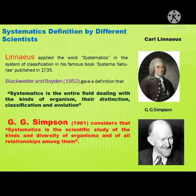Different scientists define systematics in their own way, like Linnaeus. He applied the word systematics in the system of classification in his famous book Systema Naturae, published in 1735. Another, Black Wilder and Boyden, 1952, give a definition that systematics is the entire field dealing with the kinds of organisms, their distinction, classification, and evolution.